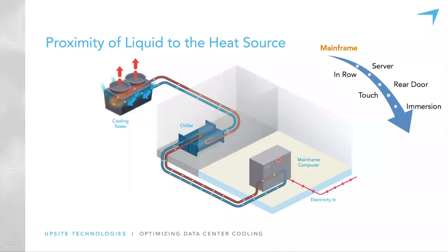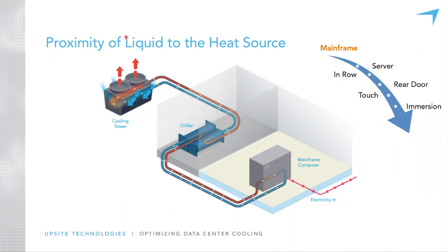Starting in the mainframe days, we've got a big box sitting in the computer room on the slab or the raised floor, and we've got chilled water flowing through the chassis picking up that heat and taking it out with liquid. It likely goes to a chiller where the heat is transferred to condenser water, which carries the heat out to a cooling tower where it is ultimately rejected to the atmosphere.